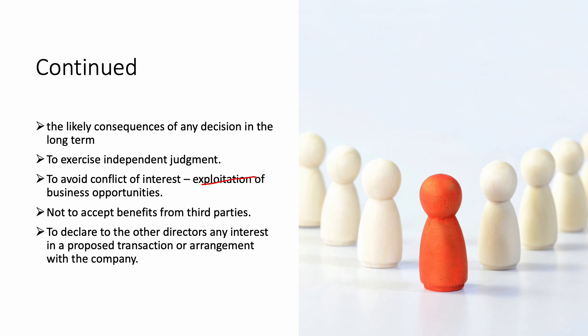For instance, if your wife is supplying certain goods to the company, you should step up and inform the other directors about that relationship and declare it, so that there is no conflict of interest. If she is still the most credible and reliable person to supply those goods, the other directors can then vote on that decision. Ensuring you declare any interest in proposed transactions helps you avoid any issues related to conflict of interest.